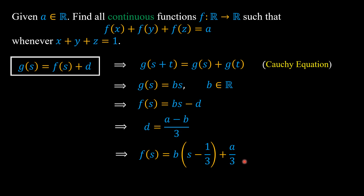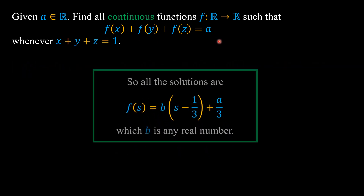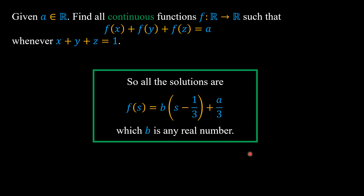It is easy to check that for any real number b, this f(s) satisfies the functional equation of the problem. So all solutions are f(s) = b·(s - 1/3) + a/3, where b is any real number. And there we are done.